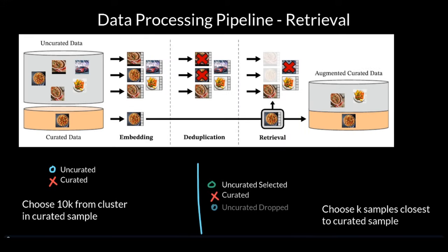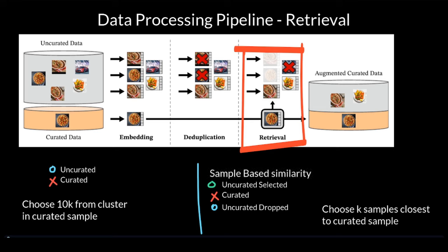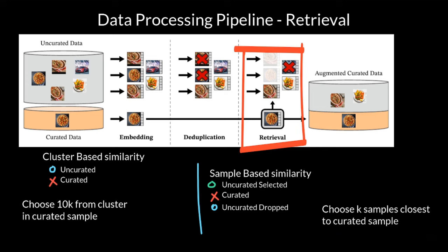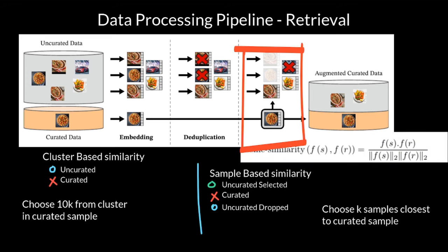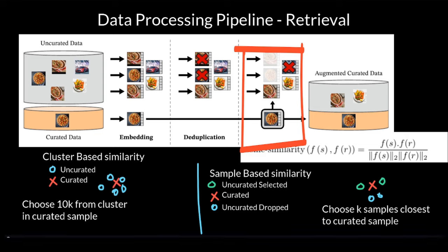They then use retrieval to find images similar to a given image in the curated dataset. More specifically, they use two types of similarity: sample-based similarity and cluster-based similarity. For both types, they use cosine similarity to measure similarities. For the sample-based approach, they sample k uncurated images nearest to a given curated image and include those above a similarity threshold, discarding the rest. They use k equal to 4 and k equal to 32 in the process.